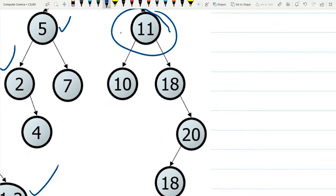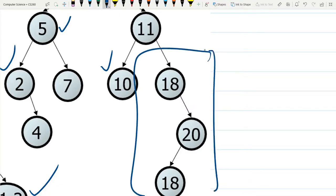Looking at this, 11 is a root node. 10 is smaller, so this is fine over here. We're going to look at the tree to the right of 11. Everything here, 18, 20, 18, is in order. So 11 is fine.